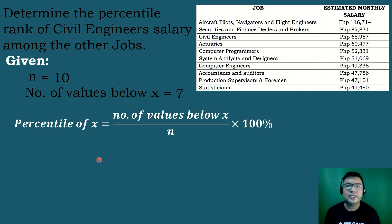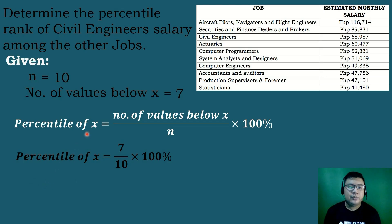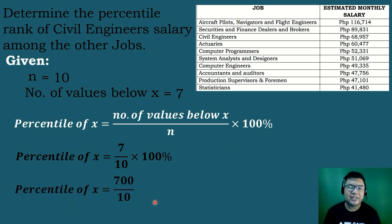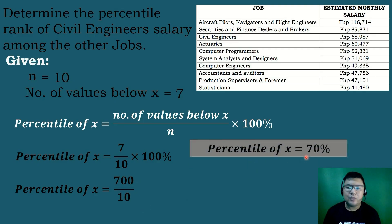We will use the formula for computing the percentile rank for ungrouped data, where the percentile of X equals the number of values below X divided by N, times 100%. Substituting: we have 7 over 10 times 100%. Simplifying: 7 times 100 equals 700, divided by 10 equals 70. Therefore, the percentile rank of the civil engineer's salary among the other jobs is equal to 70%.